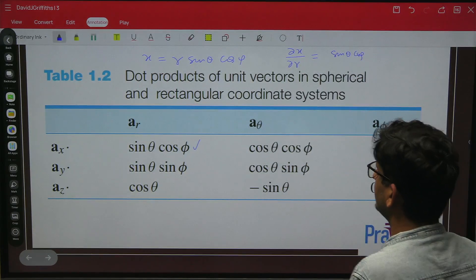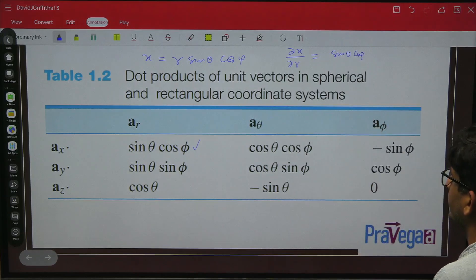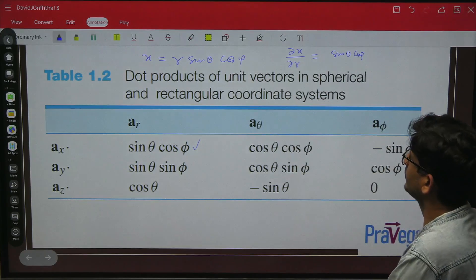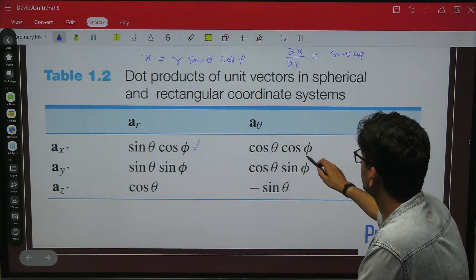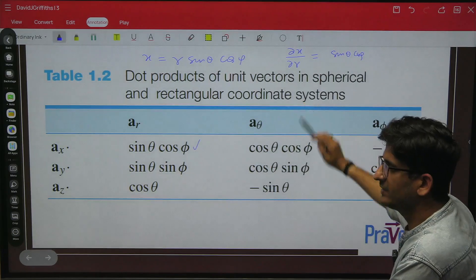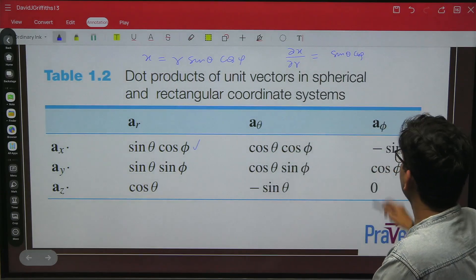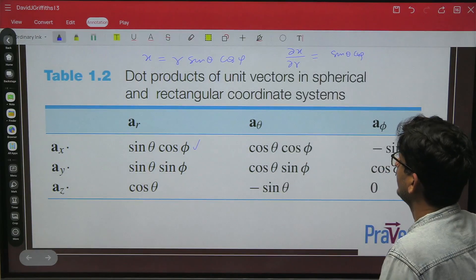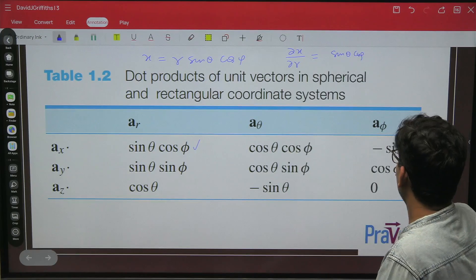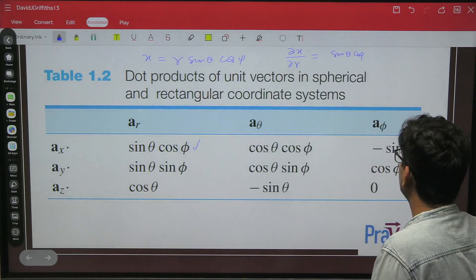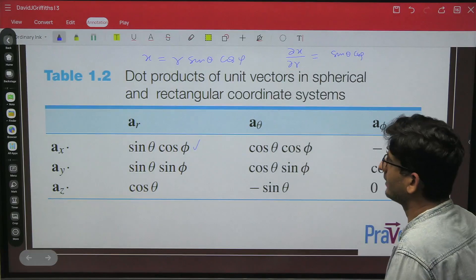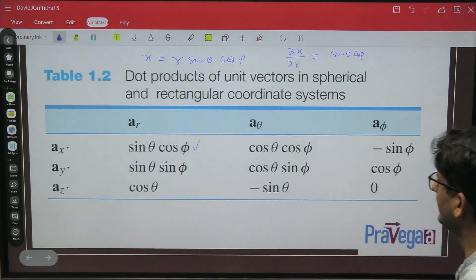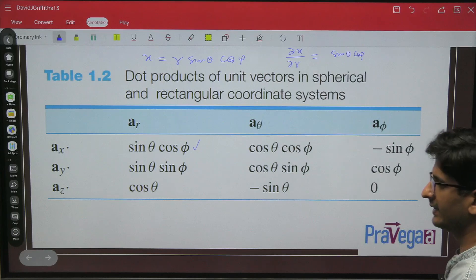Now calculate in the direction of theta. It was in the direction of r. Then calculate x in the direction of theta. So differentiate it with respect to theta. Sin theta will become cos theta. Cos phi will be cos phi. And because of the magnitude, r will be gone. And similarly, when you calculate it with respect to phi, differentiate it with respect to phi. So cos phi will become minus sin phi, divided by the magnitude. So magnitude will be that rho vector, so r sin theta will be gone. So similarly, you can fill the whole table by doing this.